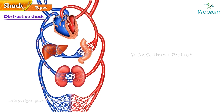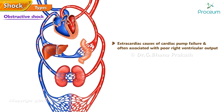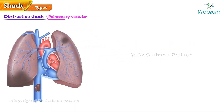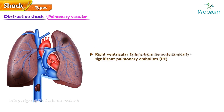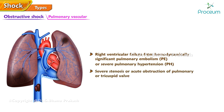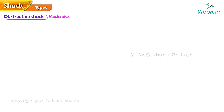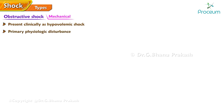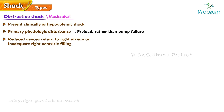Obstructive shock is mostly due to extracardiac causes of cardiac pump failure and is often associated with poor right ventricular output. Its causes can be divided into pulmonary vascular and mechanical categories. Most causes are due to right ventricular failure from hemodynamically significant pulmonary embolism or severe pulmonary hypertension. Patients with severe stenosis or acute obstruction of the pulmonary or tricuspid valve may also fall into this category. Mechanical causes present clinically as hypovolemic shock because the primary physiologic disturbance is decreased preload — reduced venous return to the right atrium or inadequate right ventricle filling.